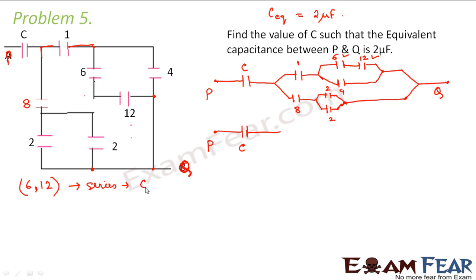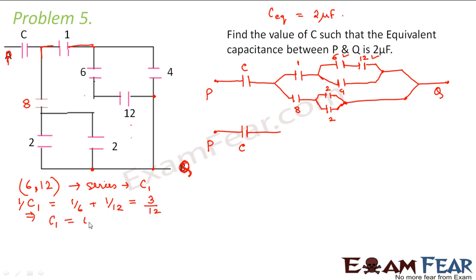So 6 and 12 are in series. Let us call their equivalent capacitance as C1. So what would be C1? 1 by C1 is equal to 1 by 6 plus 1 by 12, so that is equal to 3 by 12. Therefore C1 comes out to be 4 microfarads. So 6 and 12 can be replaced by C1, which is equal to 4 microfarads.